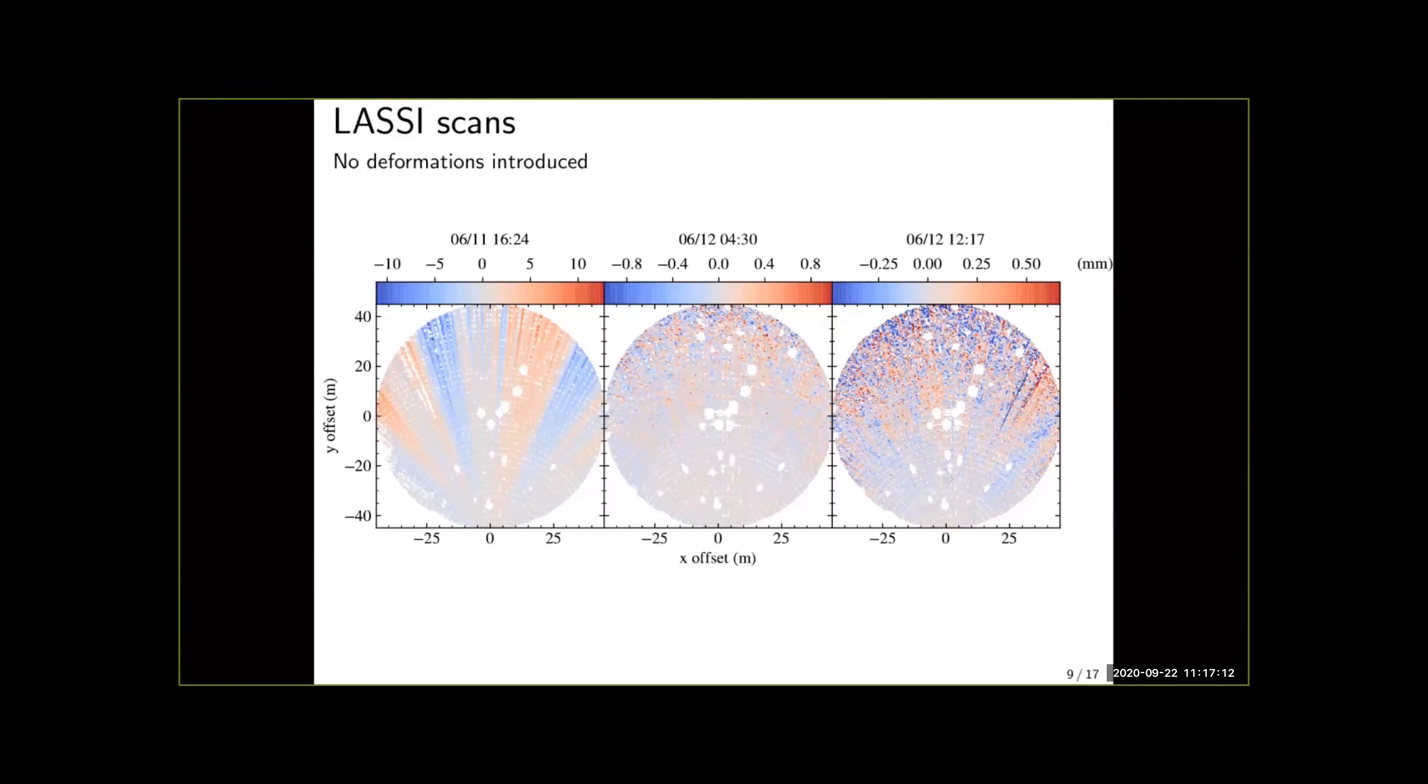Additionally here what you might notice are these white spots on the surface of the dish. This is data that has been flagged. In particular these big white circles are due to malfunctioning actuators which are easily picked out using LASI and the smaller holes and the smaller white spots are holes which give a clear view of reference retroreflectors under the surface of the telescope.